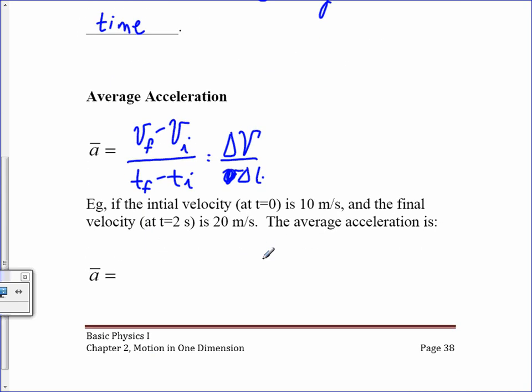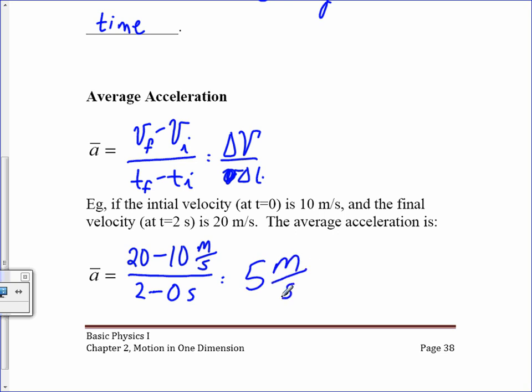For example, if the initial velocity at t = 0 is 10 meters per second, and the final velocity at t = 2 seconds is 20 meters per second, then the average acceleration is 20 m/s minus 10 m/s divided by 2 minus 0 seconds. That gives me 10 over 2, or 5 meters per second squared. The units of acceleration are meters per second per second — it's a rate of change of velocity, so the units are meters per second squared.